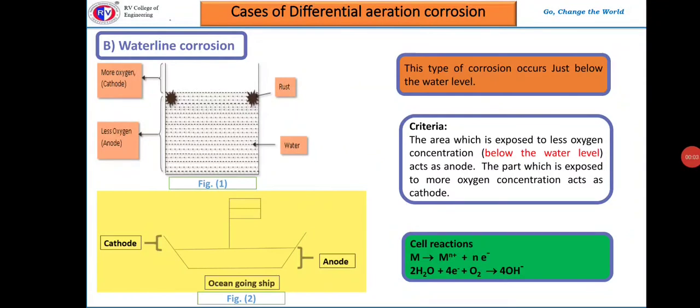Waterline corrosion is common in water-lifting pipes and ocean-going ships. Interestingly, ships sunken underwater for several years are free from corrosion, because for a ship fully submerged, the difference in oxygen concentration between the top and bottom is negligibly small. Therefore, the ship is exposed to an almost uniform concentration of oxygen and does not undergo differential aeration corrosion, though it may undergo a different type of corrosion.